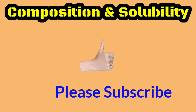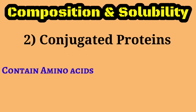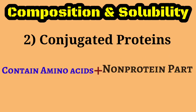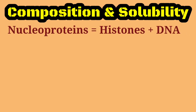Coming to conjugated proteins — the name itself indicates they are bound with some other part. Proteins which contain amino acids plus a non-protein part are called conjugated proteins. They contain two parts: one is the protein part and the other is the non-protein part, also known as the prosthetic group.